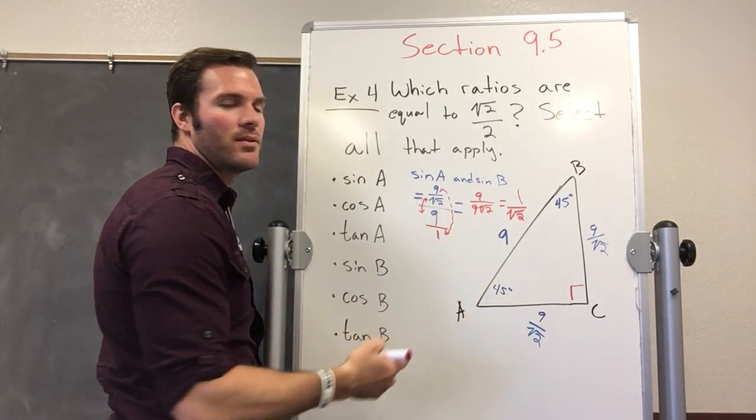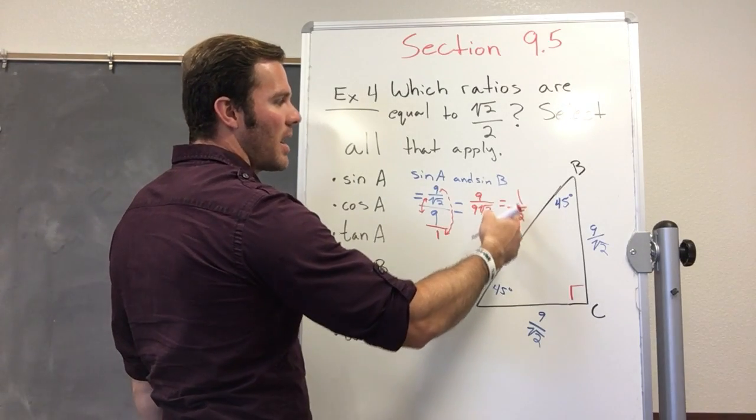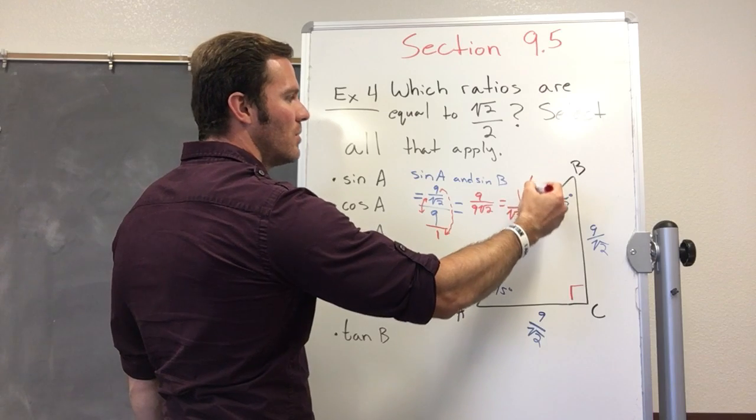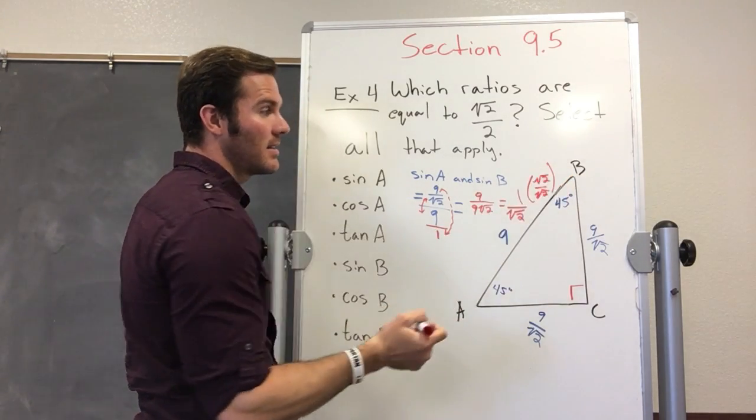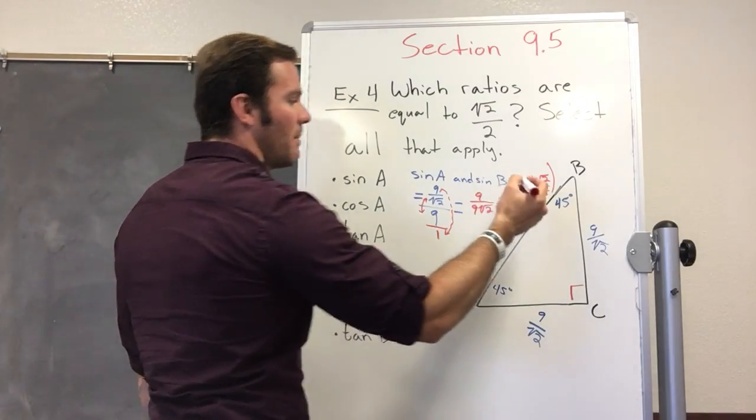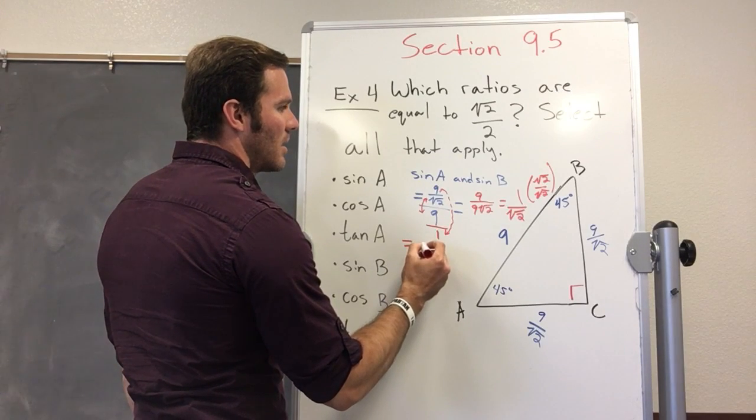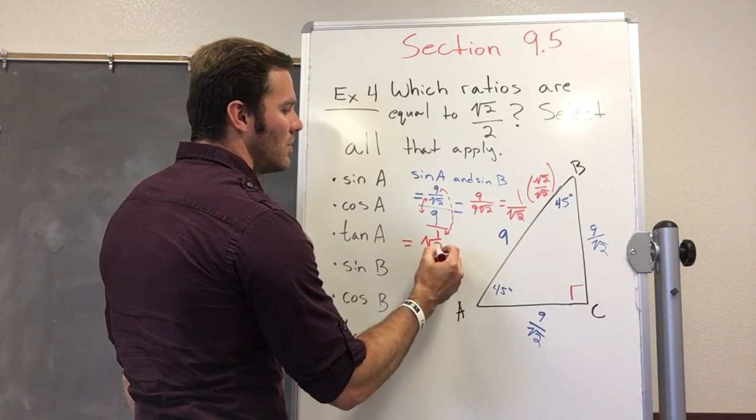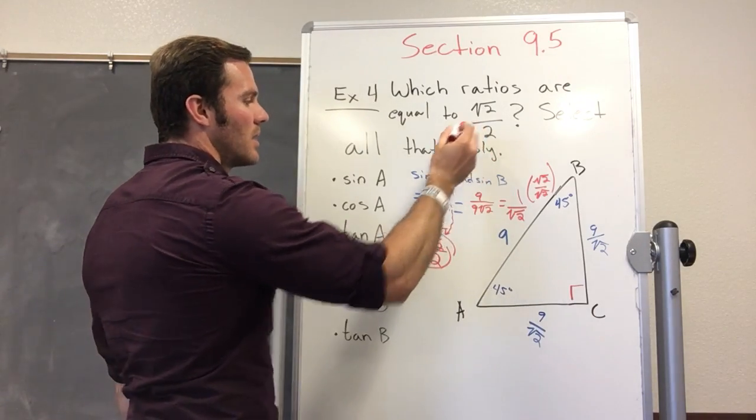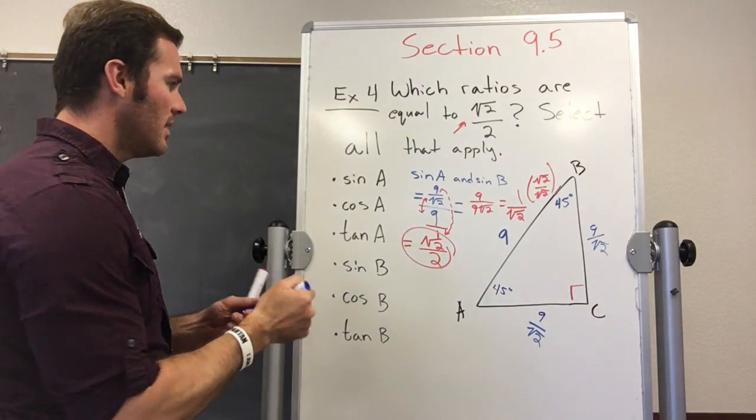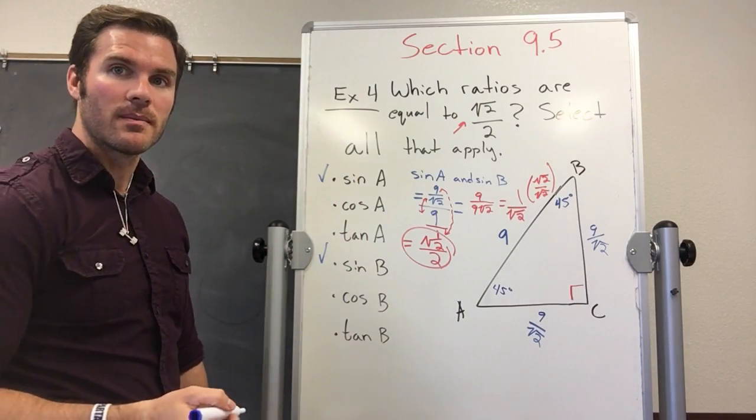But we don't want square root of 2 in the denominator. It has to be in the numerator. So I have to multiply this by the square root of 2 over the square root of 2, which is 1 technically. And that's going to come out to the square root of 2 over 2. This is what I was looking for. So sine A, sine B, all work.